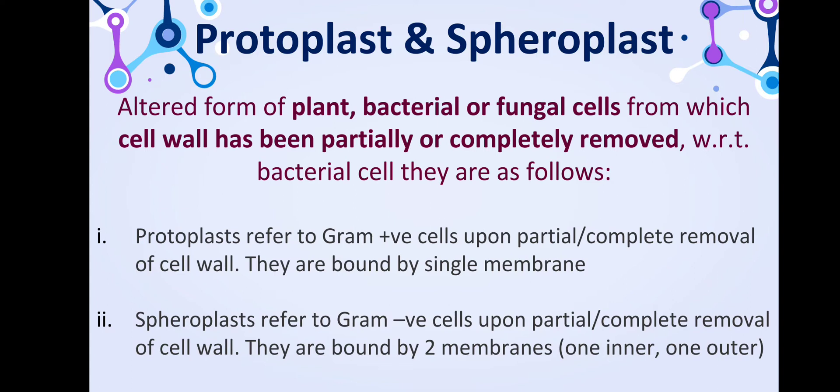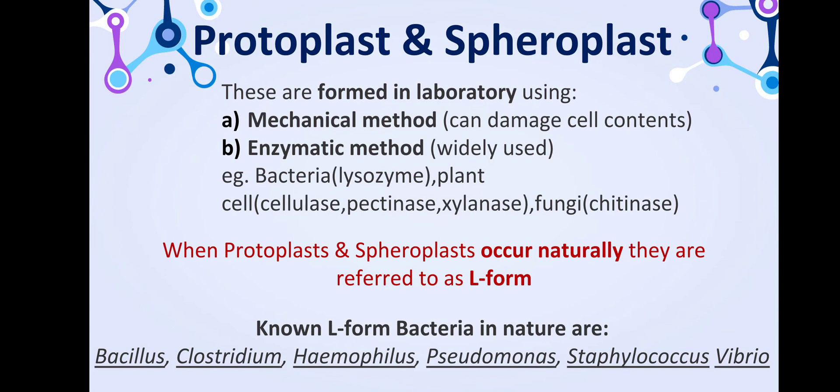We can form protoplasts and spheroplasts in the laboratory using a mechanical method, though this is not widely used now because it can damage cell contents. The more widely used method today is the enzymatic method. Examples include lysozyme for bacterial cells, cellulase, pectinase, and xylanase for plant cells, and chitinase for fungal cells. These are essentially cell wall-degrading enzymes.